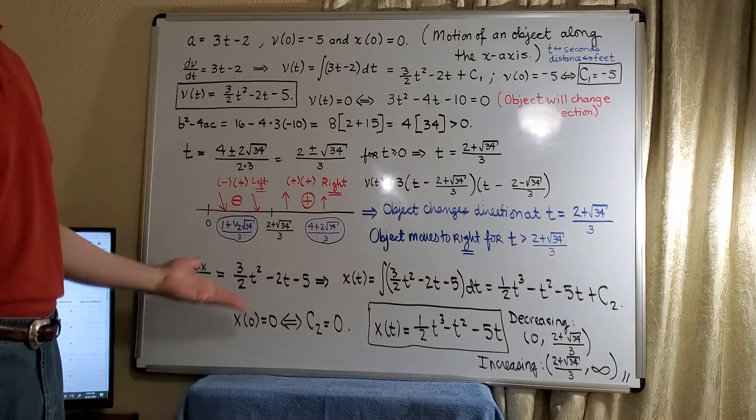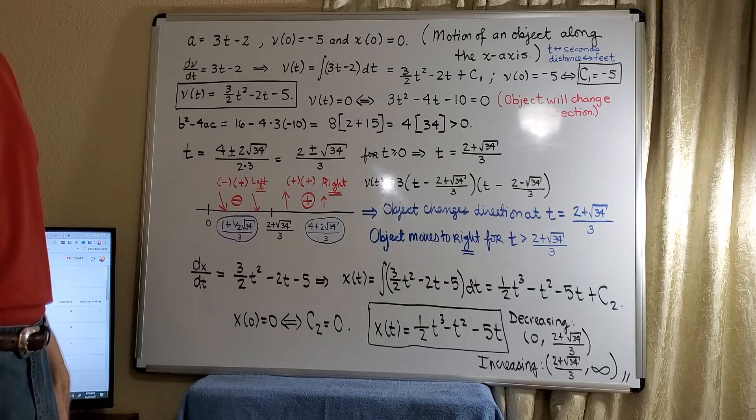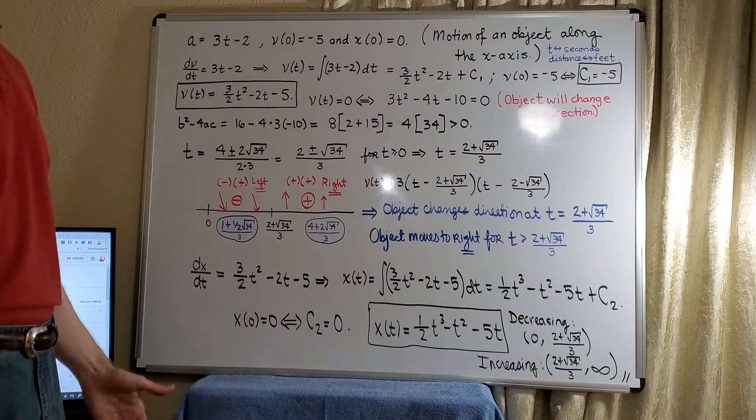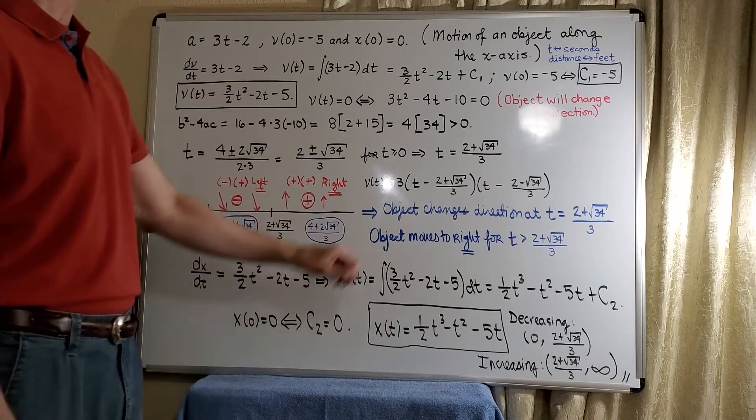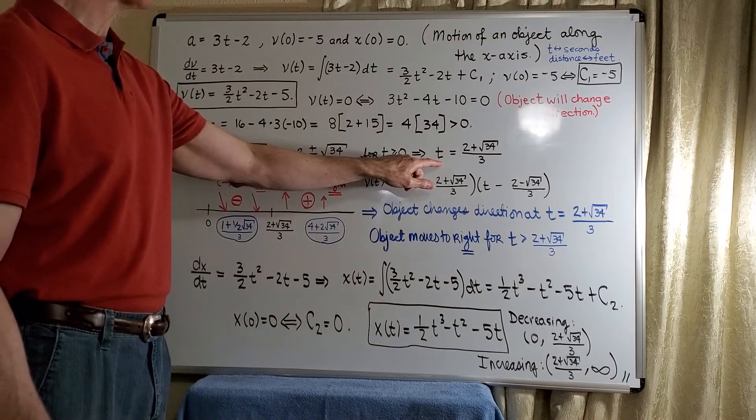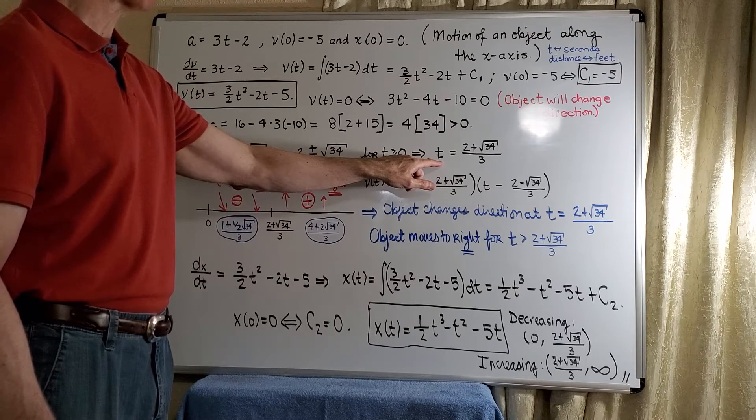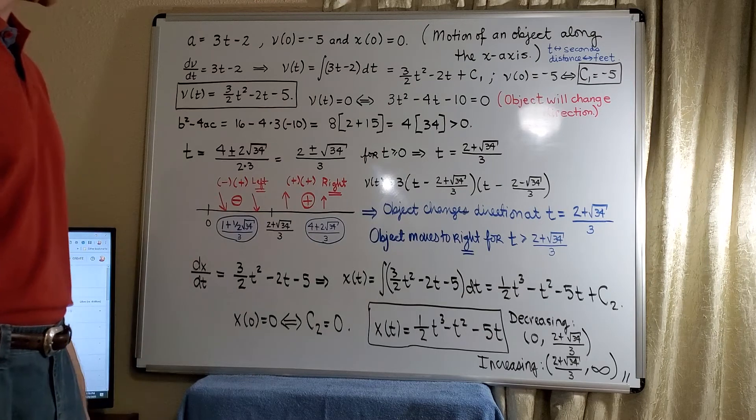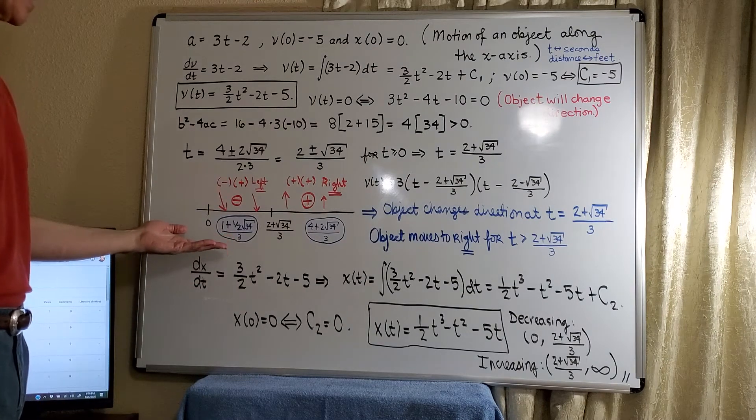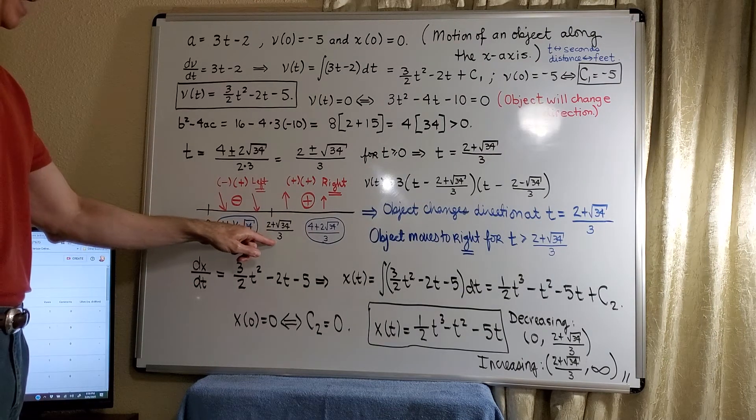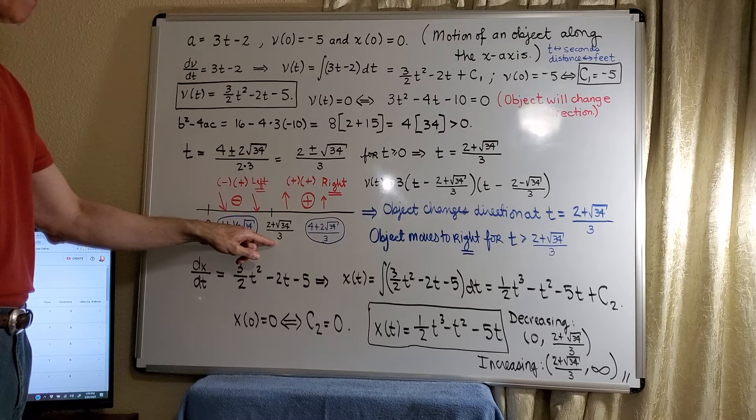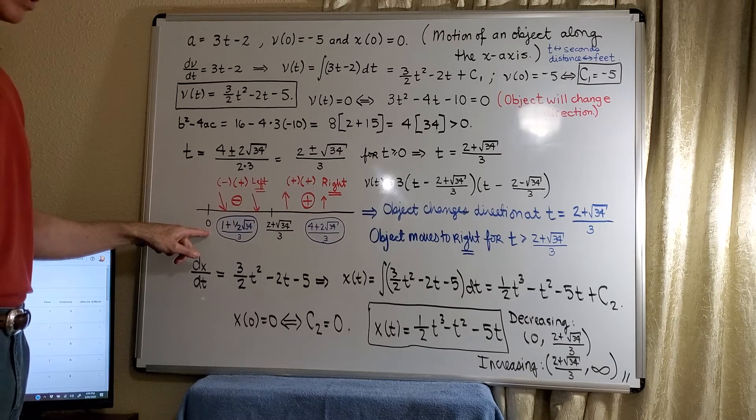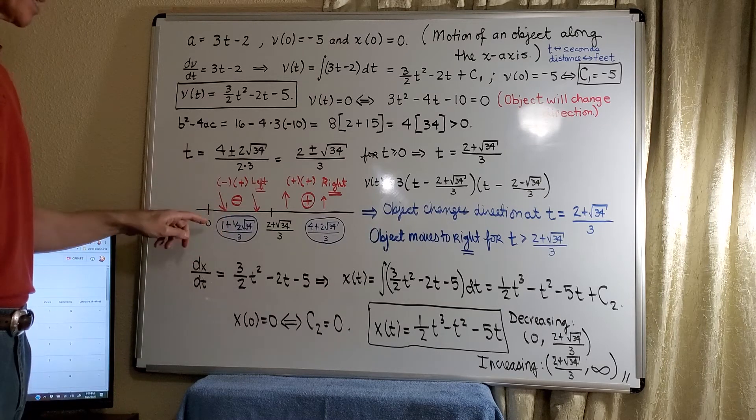Now we're certainly only interested in t greater than or equal to 0. We're not interested in t being negative. That makes no sense to us. So we're going to look at t equal 2 plus the square root of 34 divided by 3. And so now we see that we will have a change in direction.